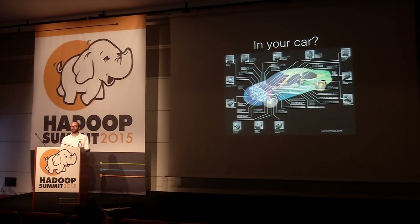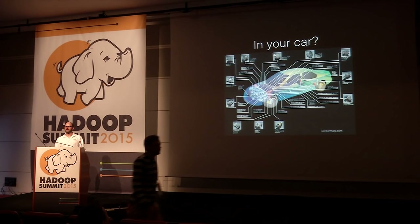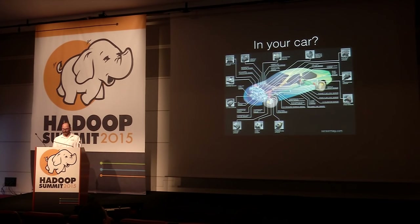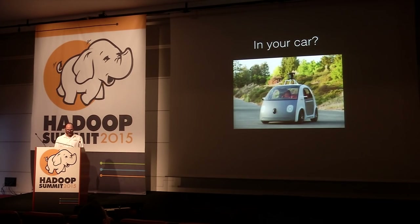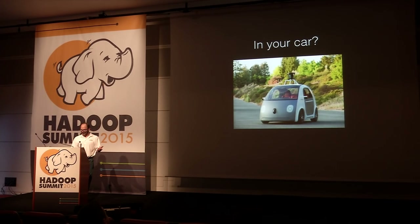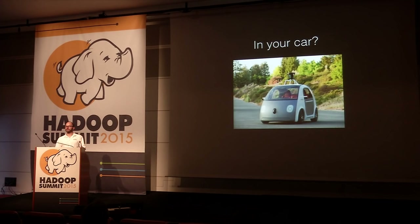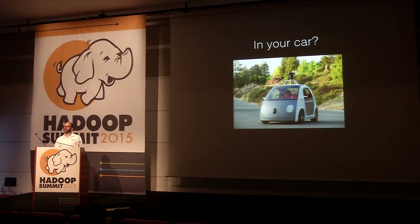Even in your car nowadays, there are almost as many sensors in a modern car as there were in airplanes a decade ago. This is the Google self-driving car. Anything autonomous — whether it's a car, a drone, or a robot — requires sensors to detect and react to the environment in which it operates.